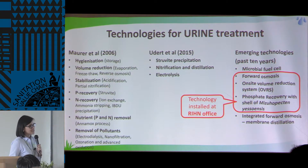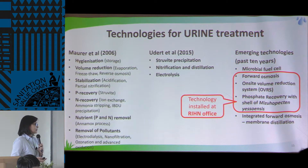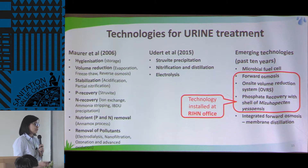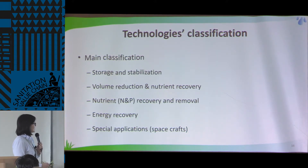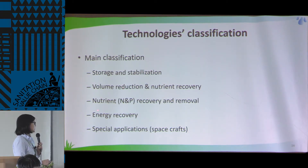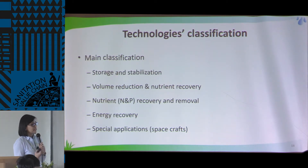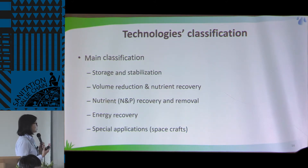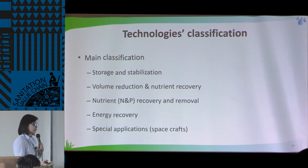Composting could be just simple — you have a matrix, you have the waste, and you just monitor the composting process. Technologies can be categorized as: storage, stabilization, volume reduction, nutrient recovery, energy recovery, and special applications.